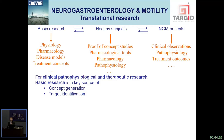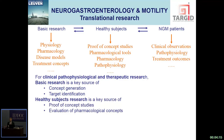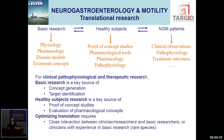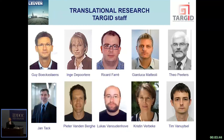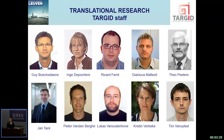For clinical, pathophysiological, and therapeutic research: basic research is a key source of concept generation and target identification; healthy subject research is key for proof-of-concept studies and evaluation of pharmacological concepts; optimizing translation requires close interaction between clinician-researchers and basic researchers — or ideally clinicians with experience in basic research, but this is becoming a rare and threatened species. Critical consideration of model choice and their limitations is required. I'm from TARGET — Translational Research Center for Gastrointestinal Disorders in Leuven. Translational research is our motto. I want to thank the senior staff, and especially Theo Peters, and all the members of my group who do all the work, some of whom are present here today. Thank you.